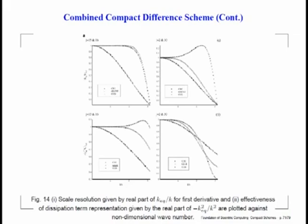The second line corresponds to the OUCS3 scheme as obtained for j equal to 2 or 30, and then there is the CCD scheme — we see a kind of overshoot even for the first derivative. Looking at the second derivative quantities, CD2 begins lower compared to the other two curves, which correspond to Lele's second derivative scheme and the CCD scheme.